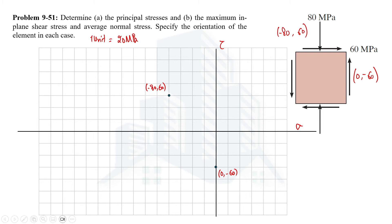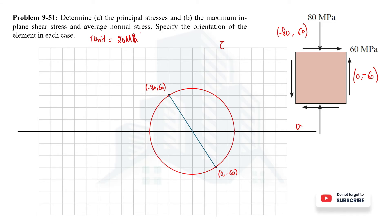Joining these two points gives us the diameter of the Mohr circle, and from that we can draw the Mohr circle. Once the Mohr circle is drawn, we can determine the required stresses. In the first part of this problem we are asked to determine the principal stresses. The principal stresses are the maximum and minimum normal stresses — the maximum is called the major principal stress and the minimum is the minor principal stress.